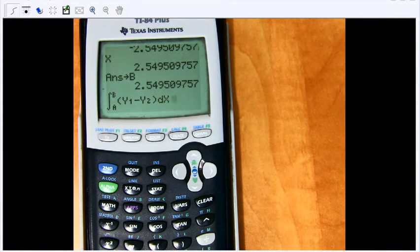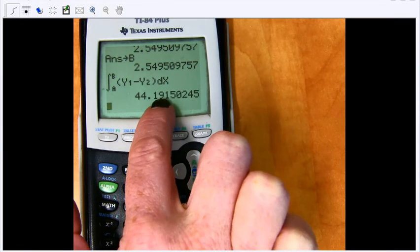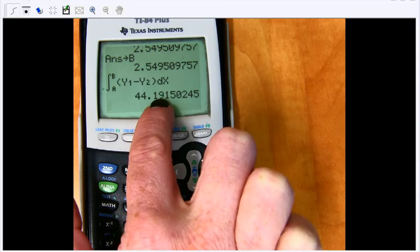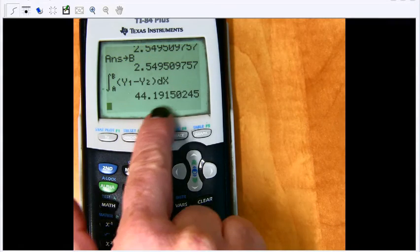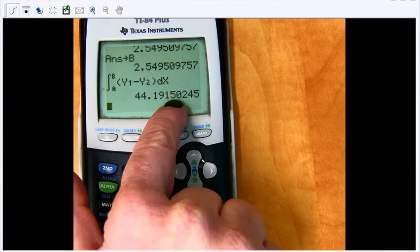Hit enter, and then I get the answer. And for AP, you could write that as 44.191 or 44.192. Both would be correct, because AP allows truncating, which just means chopping it off after that third decimal place, or rounding.